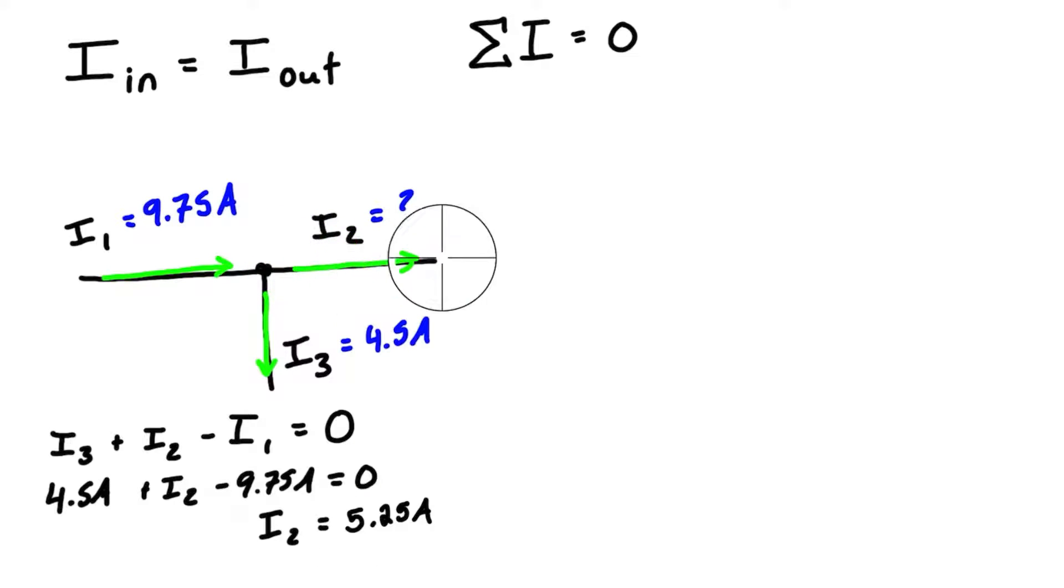Now this is a positive value, so this means that it is indeed going in the direction that we assumed when we arbitrarily labeled it as leaving the junction. If we got this as a negative value, it would just mean that the current is actually flowing the other way.